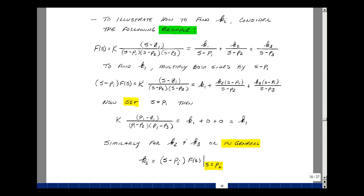Let's do an example to show how to find the k_i's in the partial fraction expansion. Take f(s) = k(s-z1)/[(s-p1)(s-p2)(s-p3)]. This equals k1/(s-p1) + k2/(s-p2) + k3/(s-p3). Let's multiply both sides by (s-p1). On the left we get f(s)(s-p1), which becomes k(s-z1)/[(s-p2)(s-p3)] after cancellation.